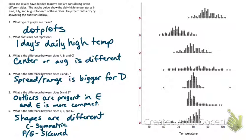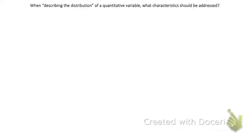What we've just uncovered are the four qualities we're going to want to talk about when describing what a distribution looks like for quantitative data. We're going to talk about center, spread, outliers, and the shape of the distribution — every time we need to describe or compare distributions. On the next page we're going to make some notes about how to do each of those.